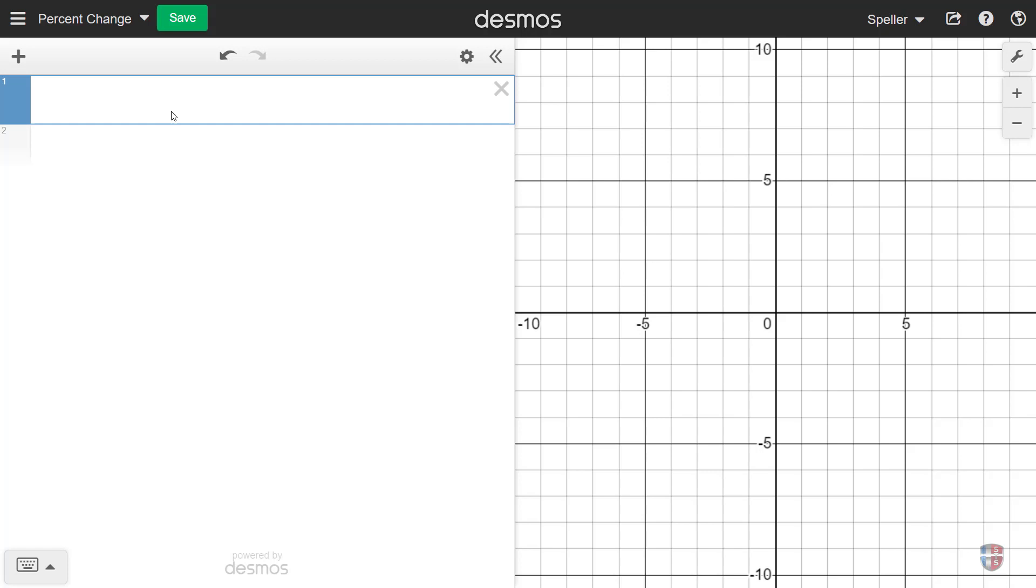Welcome back. In today's tutorial, we're going to calculate the percent change using Desmos. We're going to begin by creating a function called F, and then F is going to receive two inputs. The first input is going to be the original value, so I'm going to use x underscore original.